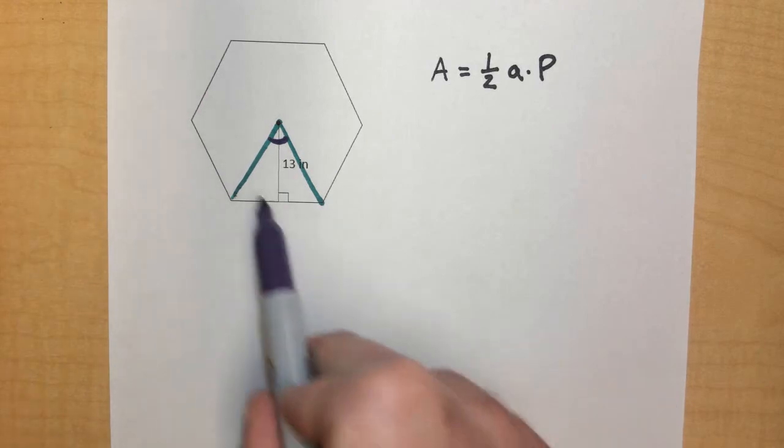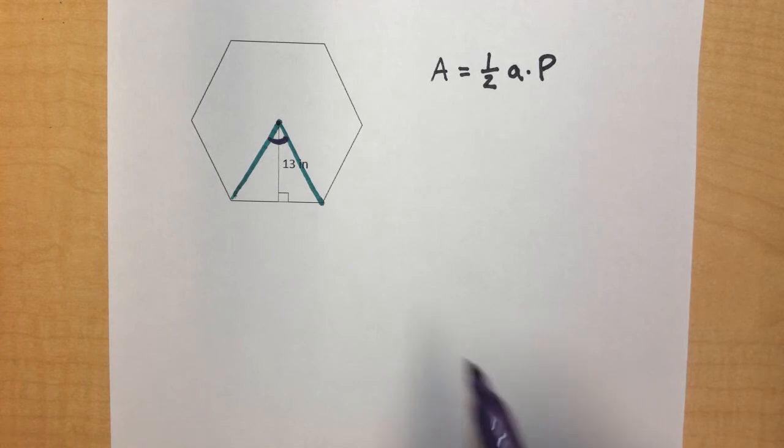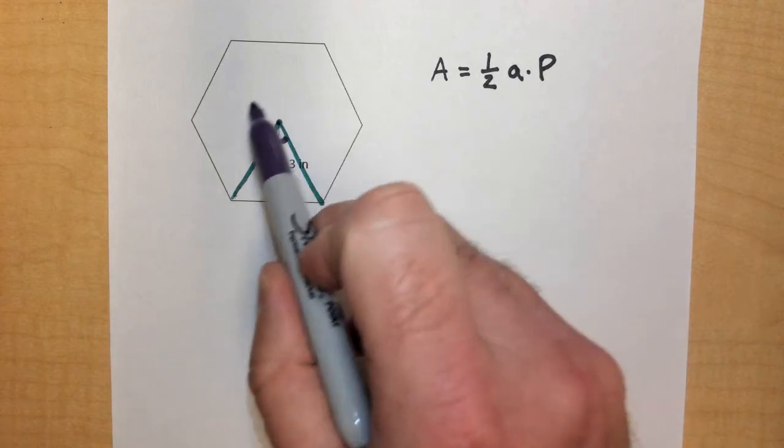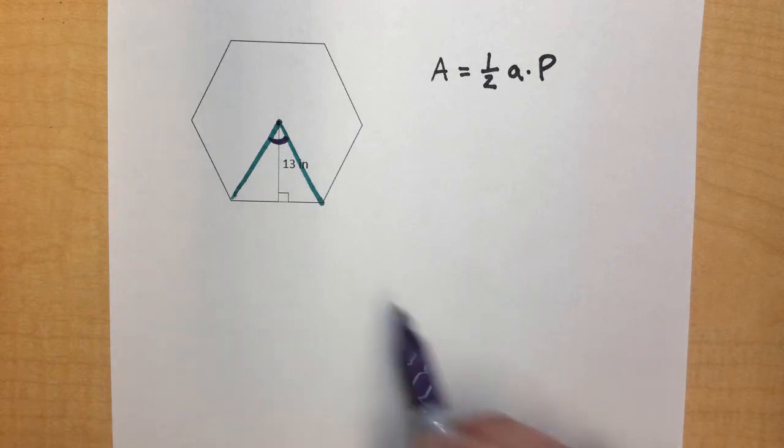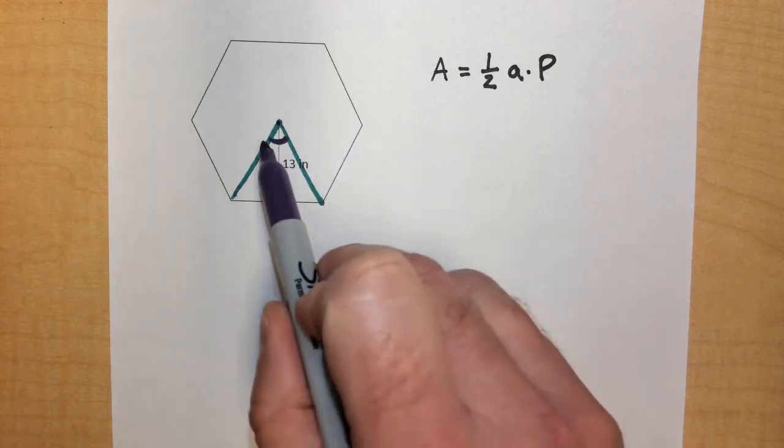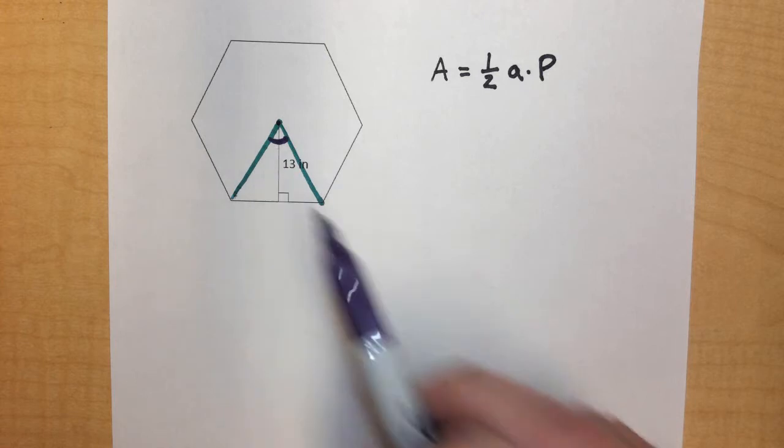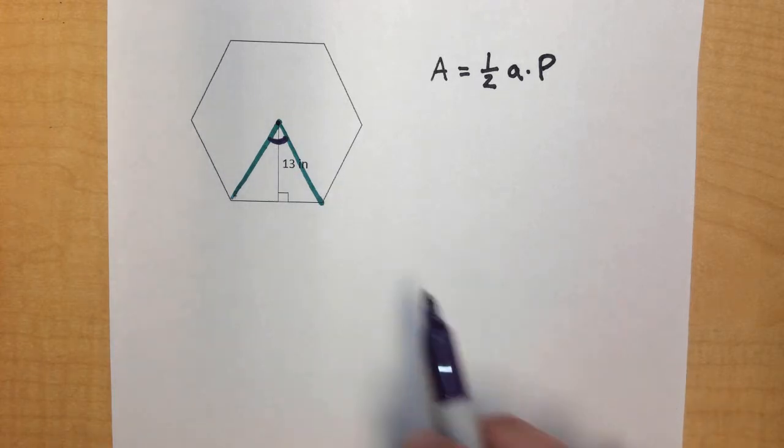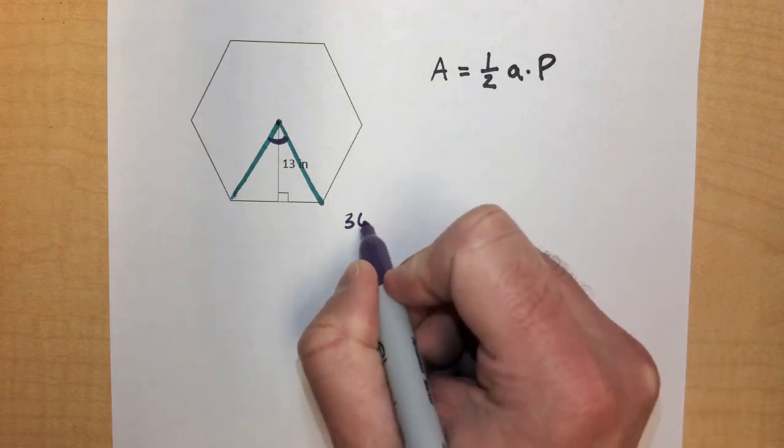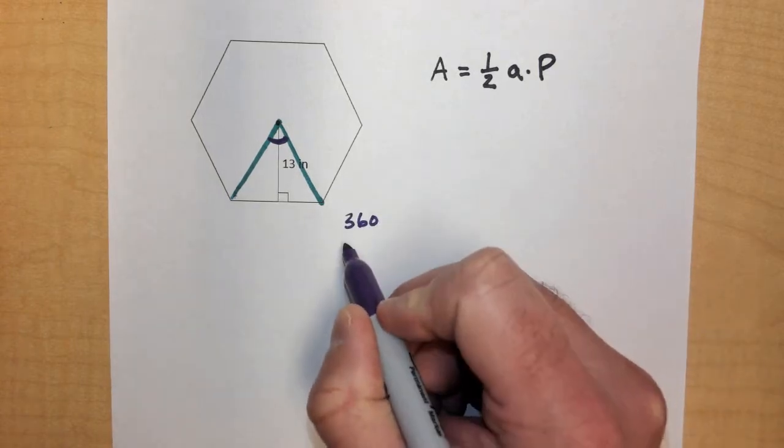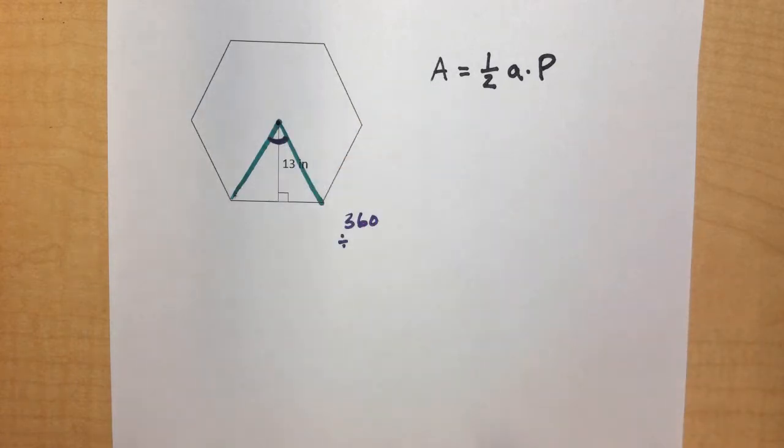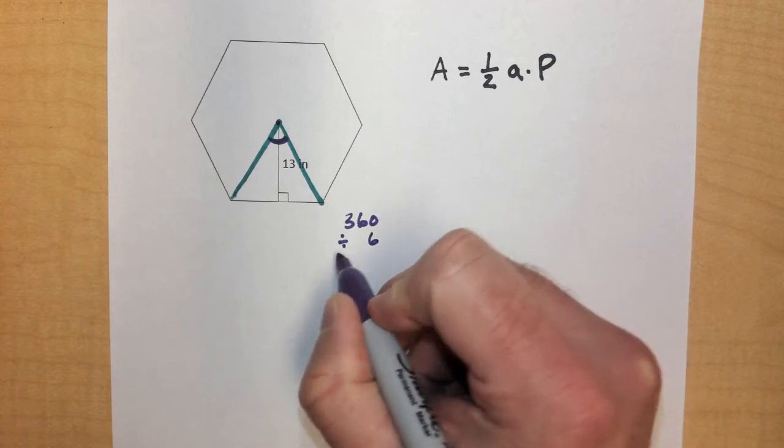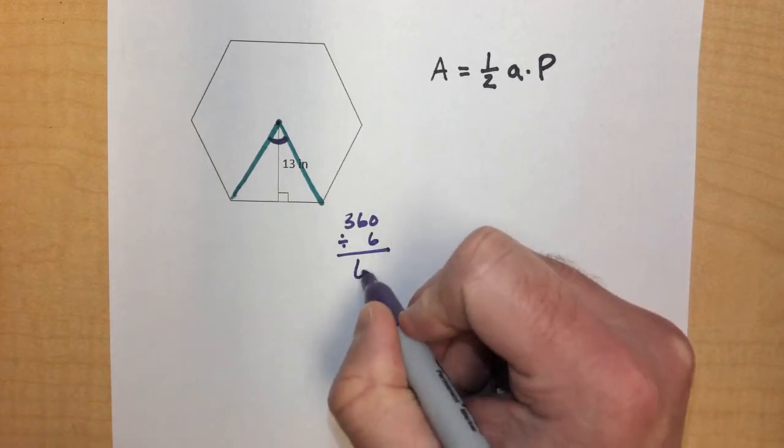So, to figure out the measurement of that central angle, first we have to understand that just like it does in a circle, if we were to add all of the central angles together in the center of the shape, they would all add up to 360 degrees. So it's one full rotation through the center of that shape is 360 degrees. And to figure out the central angle measurement, all we need to do is take our 360 degrees, divide by the number of central angles we have. In this case, since we have six triangles, we have six central angles that are formed. And we find out that each one of those angles is 60 degrees.